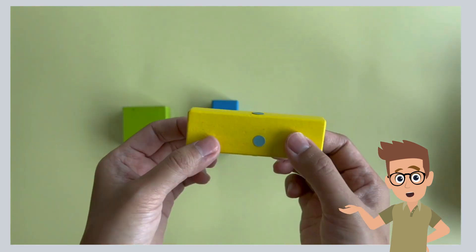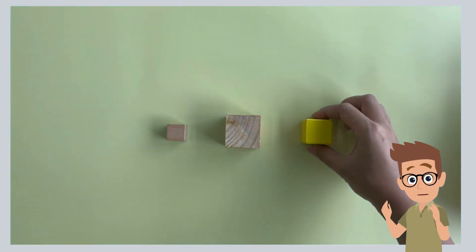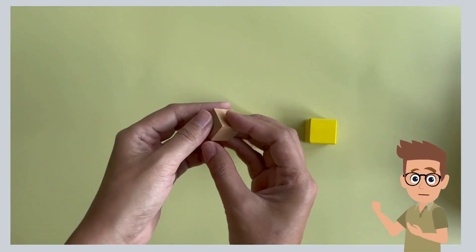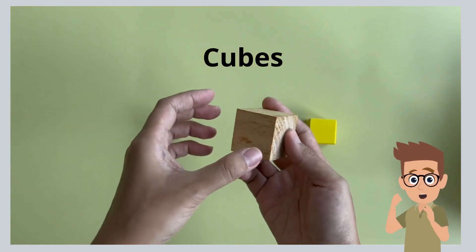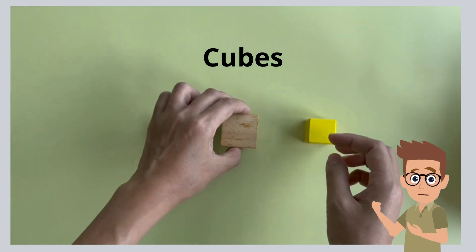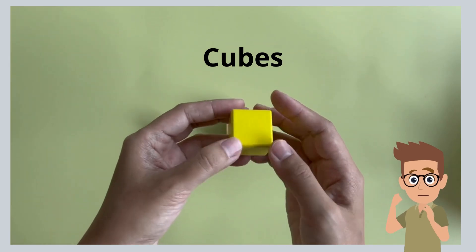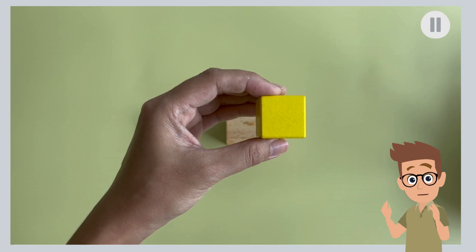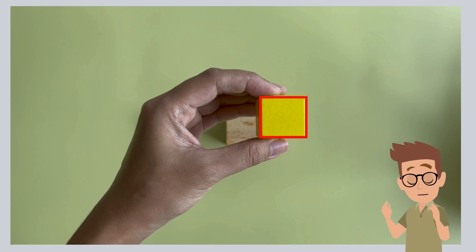Now, let's look at the next group of solids. What are these solids called? They are cubes. Observe their faces. What do you notice about the faces of cubes? Pause and discuss with your friends. The shape of each face is a square.